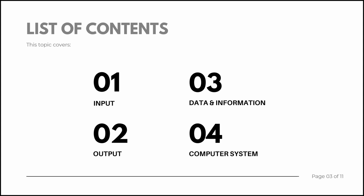This topic covers four parts. The first part is on input, the second part is on output, the third part is on data and information, and lastly, the fourth part is computer system.